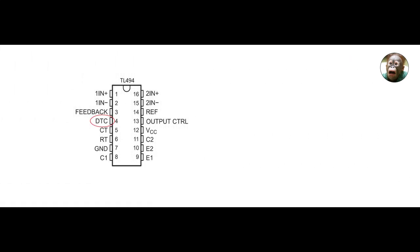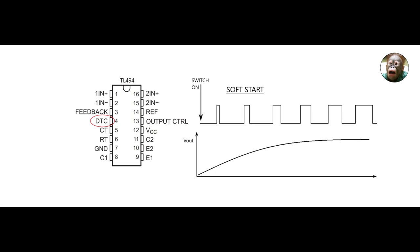The dead time control pin can also be used for an important feature called soft start. Soft start is a safety feature which causes the output pulse width and therefore the output voltage to increase slowly when you first turn on the chip. This is done because when a power converter first switches on, it senses the output voltage as being zero and switches on hard to compensate. This can cause large inrush currents or overshoot at the output voltage, and the soft start feature is there to prevent that.